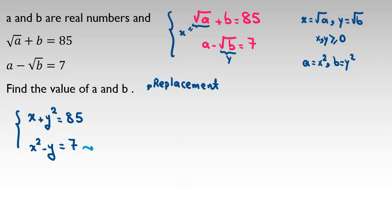We say from this one, x squared, take 7 to left-hand side, negative 7 equals negative y to right-hand side, y. If we replace y with x squared minus 7 in the first equation, x plus x squared minus 7 squared equals 85.